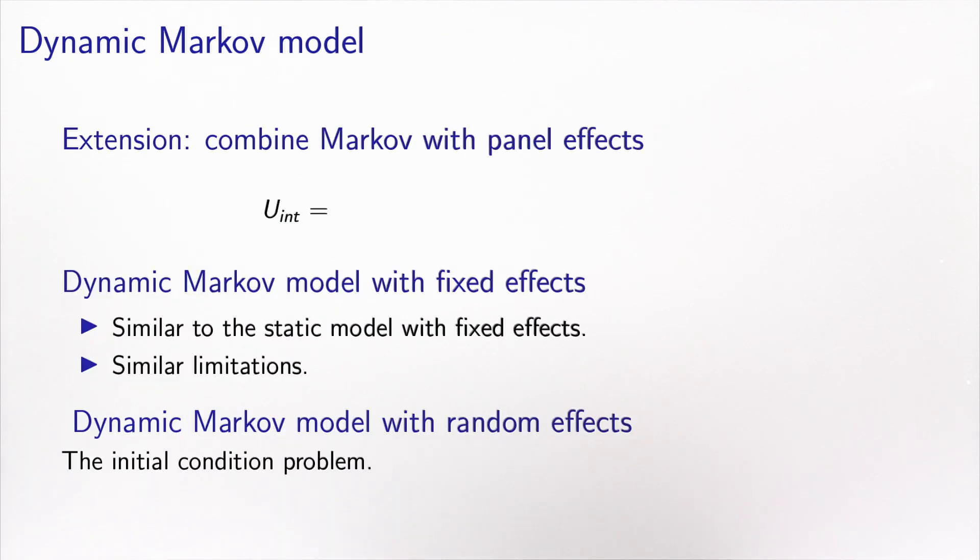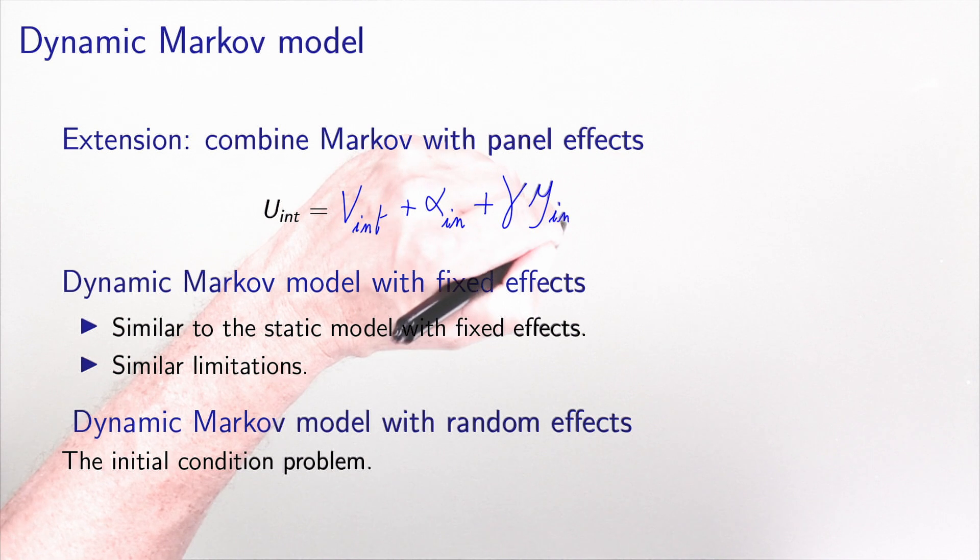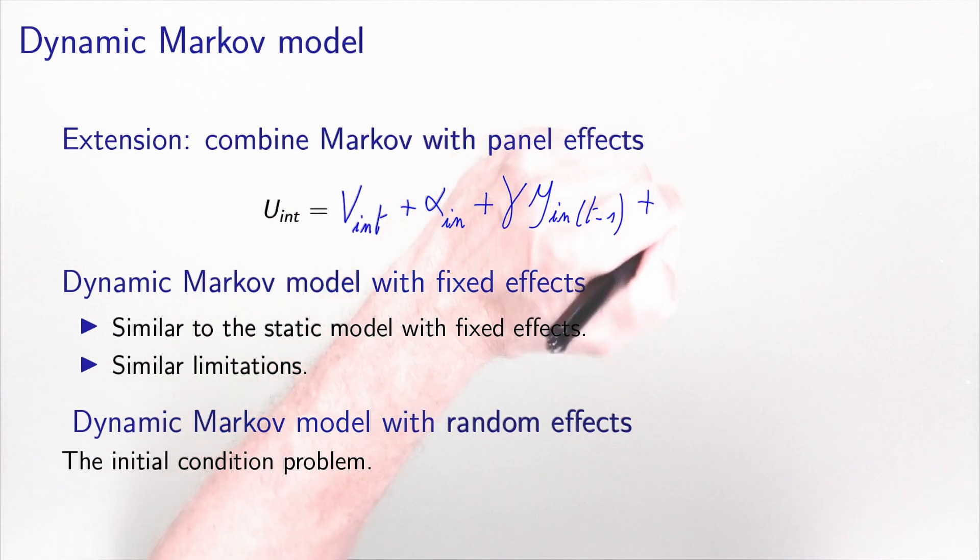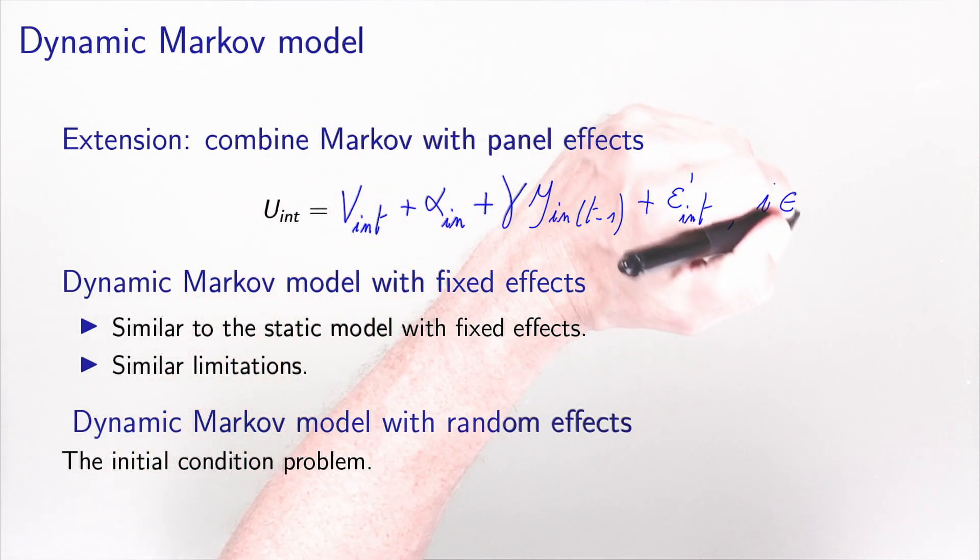In this context, the utility function can be written in the following way. So we have the deterministic part. We have the agent effect. We have the previous choice, which is characterized by this binary variable defined for the previous time interval. And then we have this epsilon prime i n t, which is assumed to be i.i.d. extreme value and i.i.d. across i, n, and t. And this for each alternative in the choice set of individual n at time t.